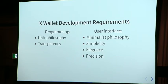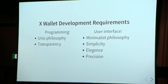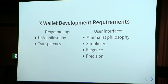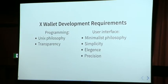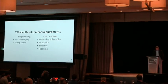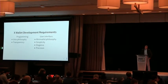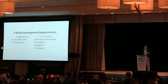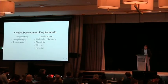For user interface, we take a minimalist philosophy — focusing on solving the problem and removing anything absolutely unnecessary. We try to minimize or eliminate text and replace it with symbols. Key elements include simplicity, elegance, and precision. That all leads into accessibility, making sure the product is easy to use by as many people as possible.